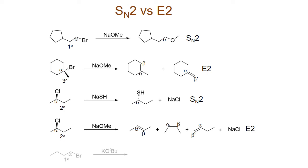Lastly, let's look at an example where we have a primary alkyl halide but our reagent is a strong base and a weak nucleophile. In this particular case, since our reagent is a weak nucleophile, even though we are working with a primary alkyl halide, our major product is going to be the elimination product and the preferred reaction is going to be an E2 reaction. Hopefully these examples give you some idea about how to analyze the reagent and the alkyl halide to predict the outcome under a given scenario.